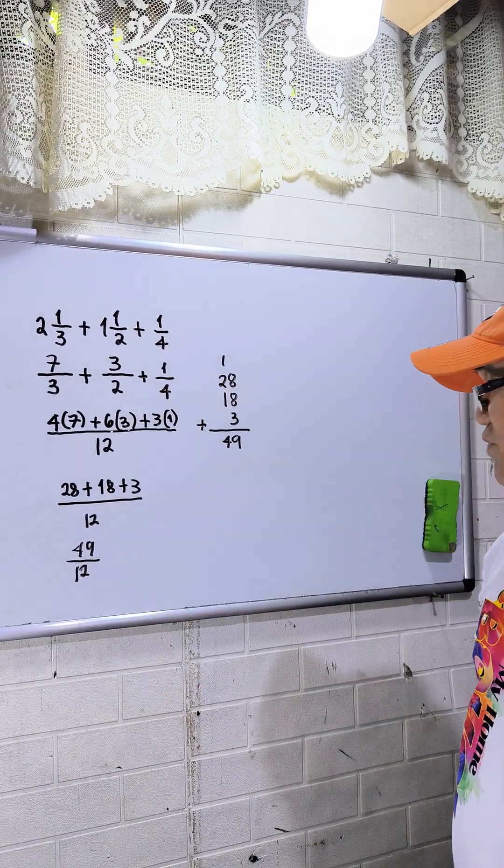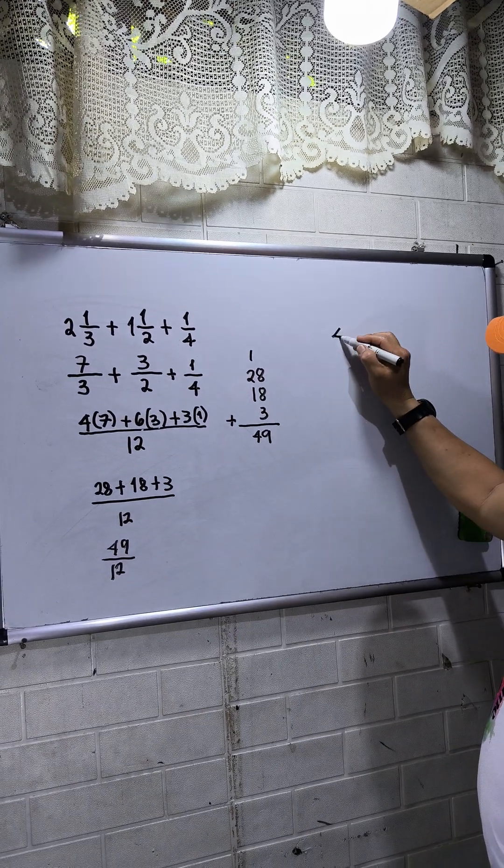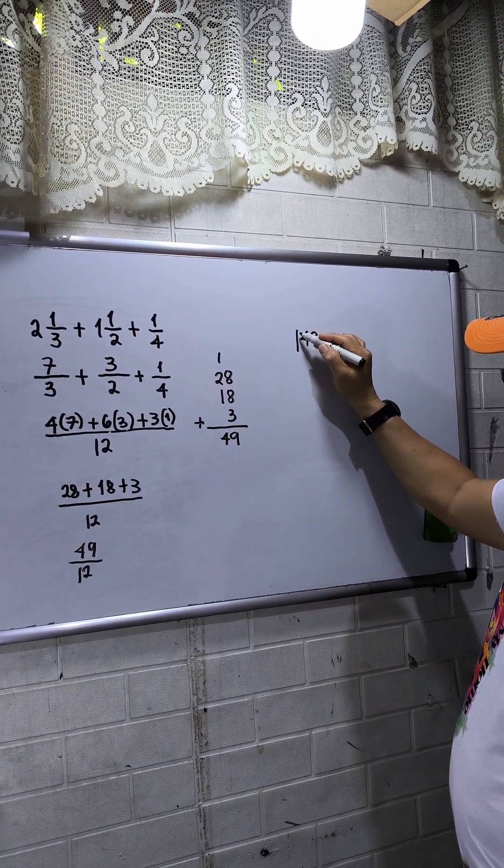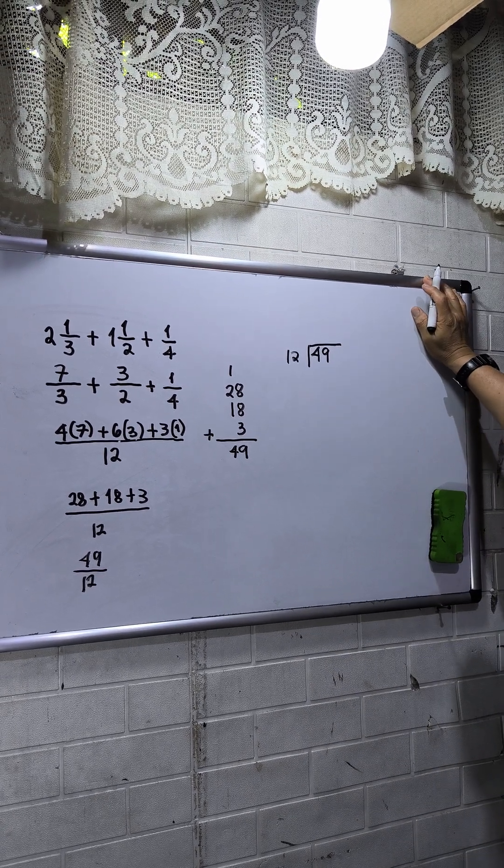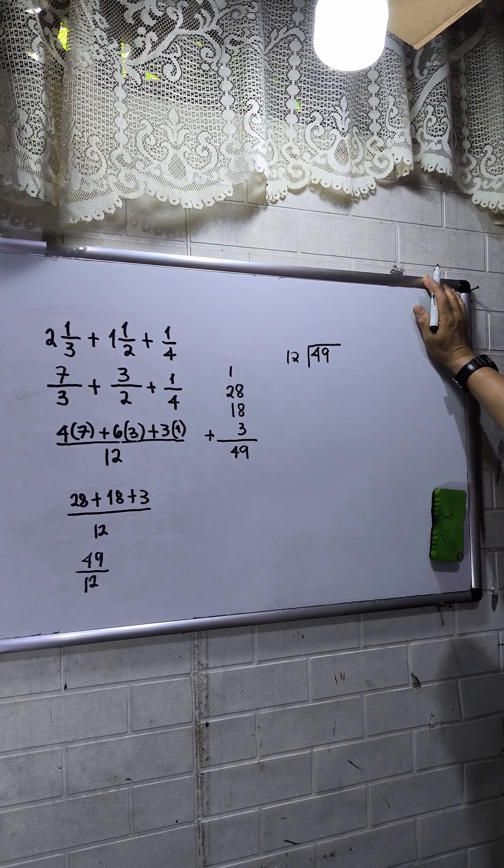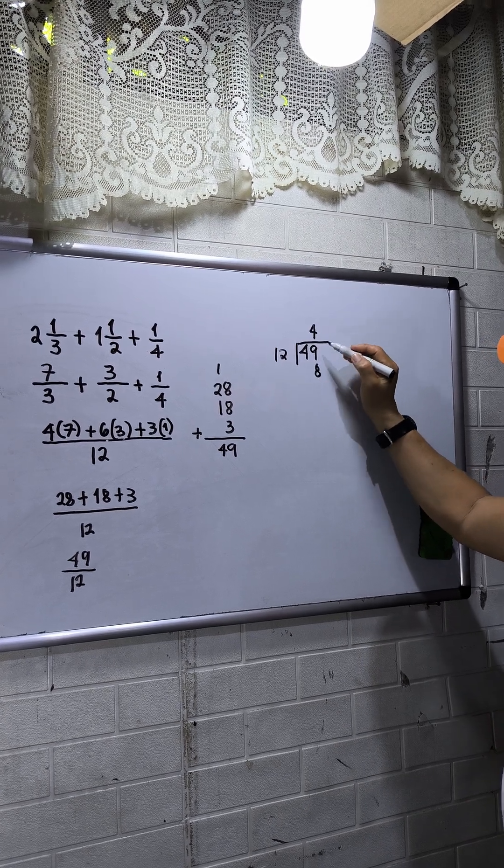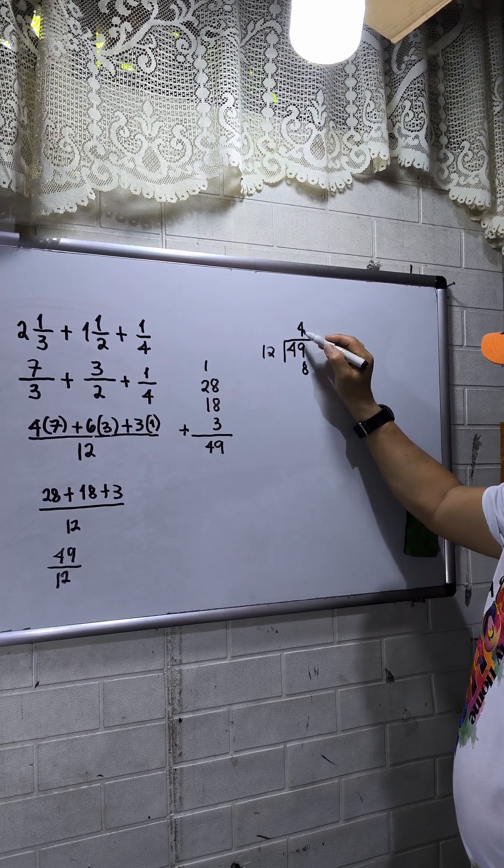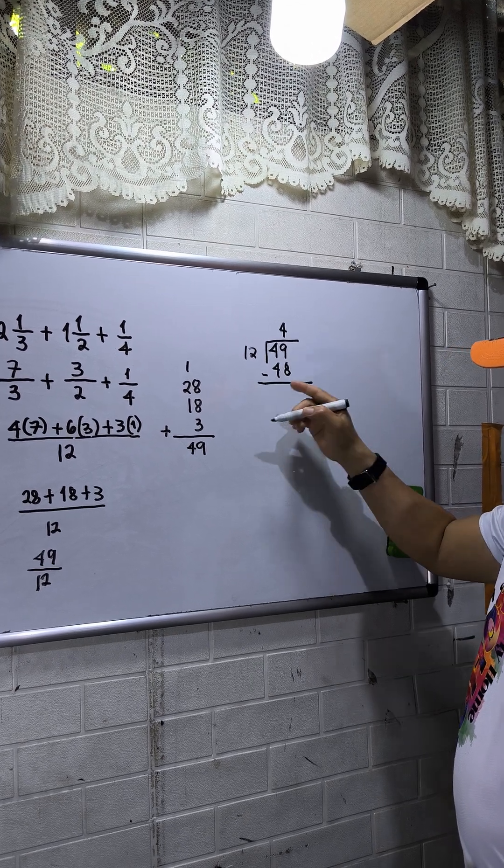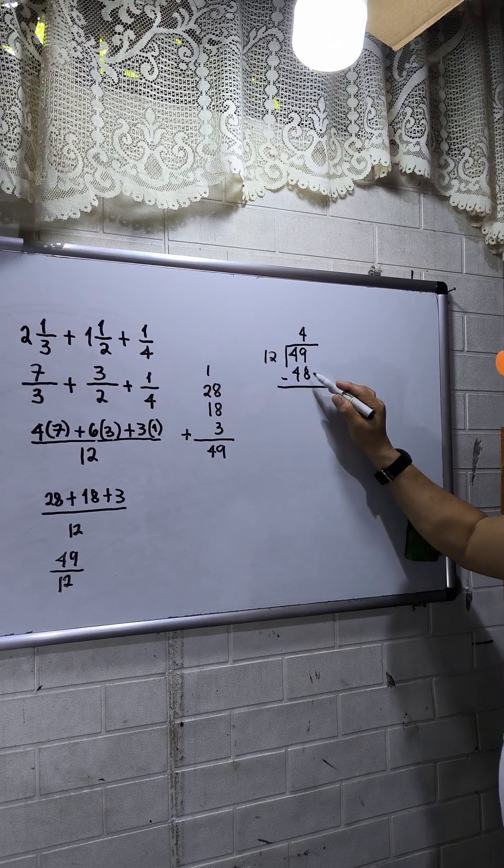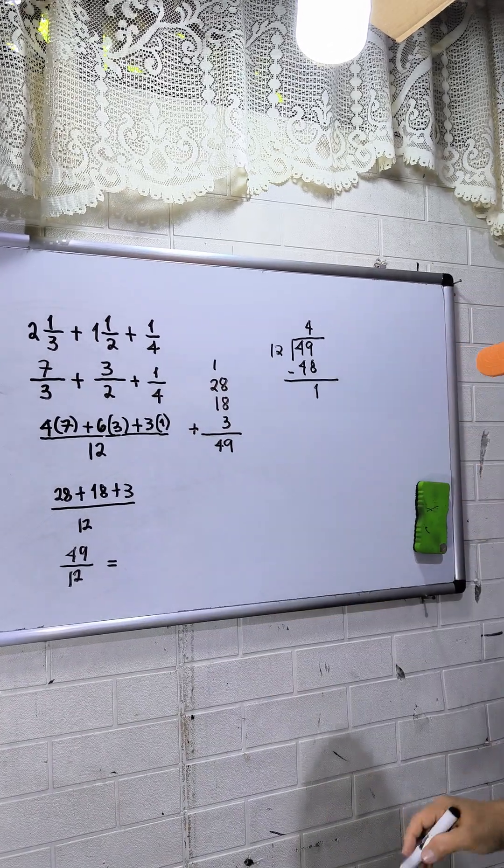How many 12s are in 49? There are 4. 4 times 2, that is 8. Then 4 times 1, that is 4. Then minus, I have now 9 minus 8, that is 1.